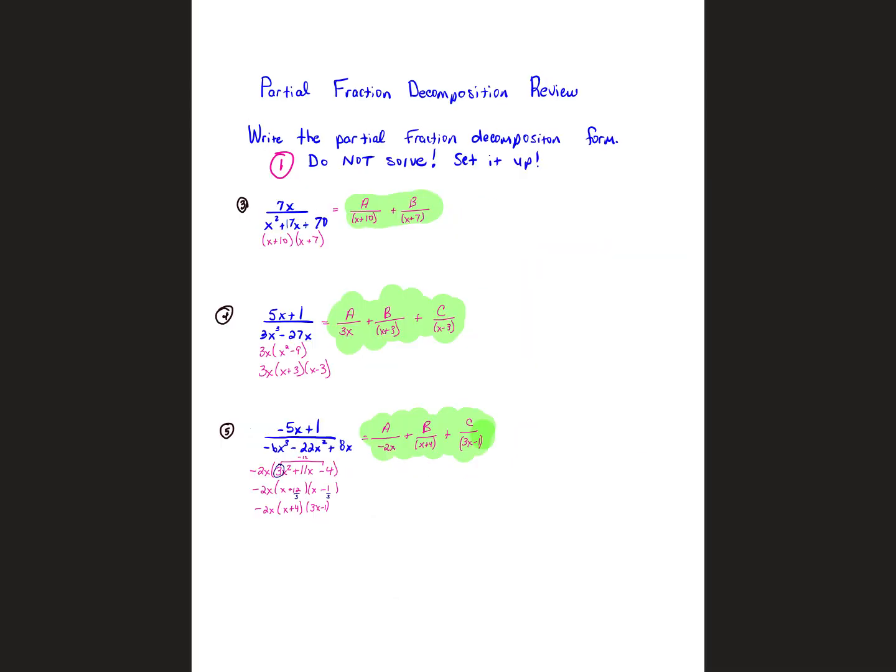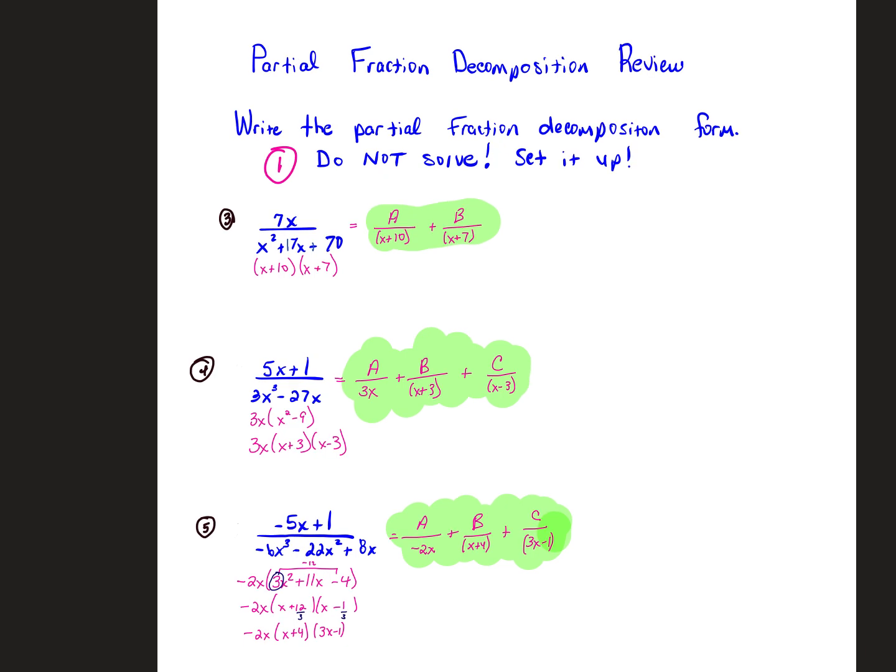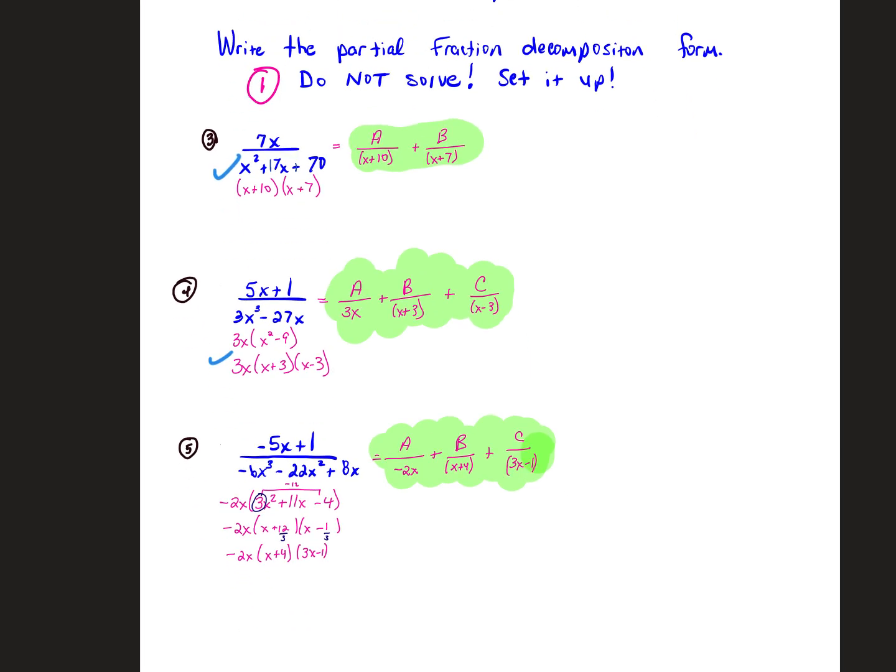There's going to be one where you have to set up the partial fraction decomposition and not solve it. So the first thing you need to do is factor the denominator. And then however many pieces the denominator has, that's how many fractions you have. So you see in this one, there's three different pieces, so we have our three different fractions. And just use your capital letters A, B, and C to set that up.